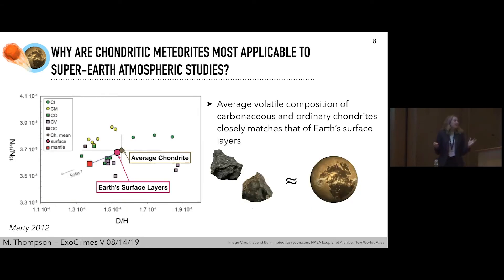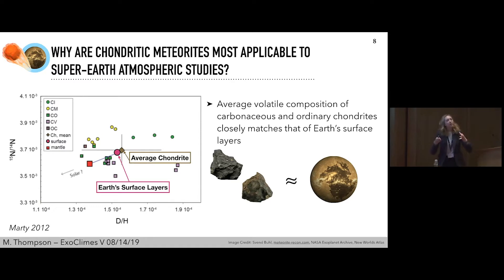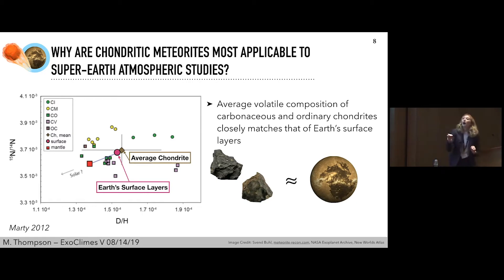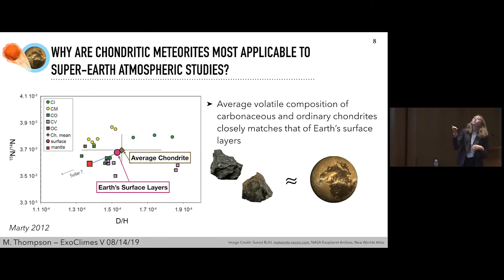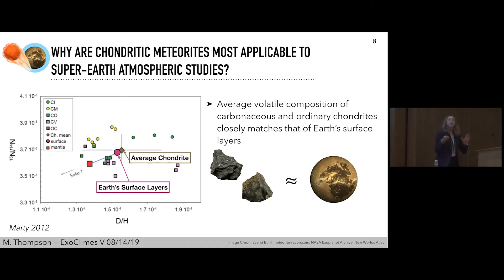So why are chondritic meteorites the most applicable to super-earth atmospheric studies? It turns out that the volatile elements in the Earth — like hydrogen, nitrogen, and oxygen — are believed to have originated from the same reservoir that sourced the parent bodies of the chondritic meteorites. This is evidenced in a plot from Marty 2012, where the isotopic composition of hydrogen (expressed as the D/H ratio) versus the isotopic composition of nitrogen shows that Earth's surface layers — including Earth's oceans and atmosphere — have a very similar value to the average of ordinary and carbonaceous chondrites combined. So the average volatile abundances from these chondrites are pretty similar to what we see in Earth's atmosphere and surface layers.